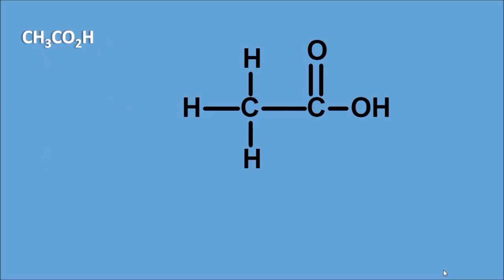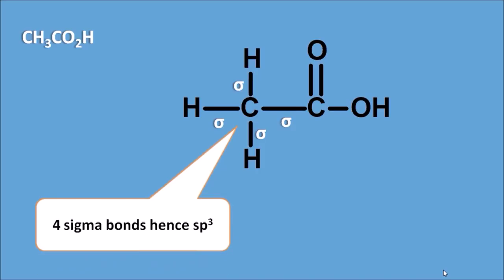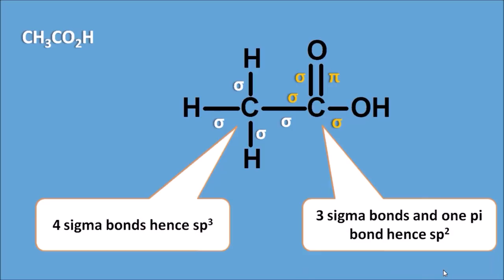CH₃CO₂H is acetic acid, which has two carbons. The CH₃ carbon has three sigma bonds to hydrogen and one sigma bond to carbon — four sigma bonds total — so it is Sp3 hybridized. The carboxylic acid carbon has a sigma bond to carbon, a sigma bond to OH oxygen, a sigma bond to carbonyl oxygen, and a pi bond with the carbonyl oxygen — three sigma bonds and one pi bond — so it is Sp2 hybridized. Simply: one pi bond → Sp2, two pi bonds → Sp, no pi bond → Sp3.